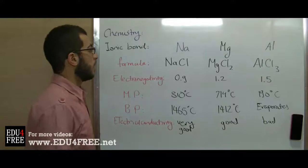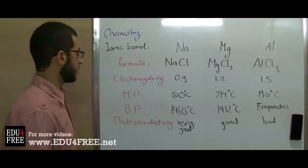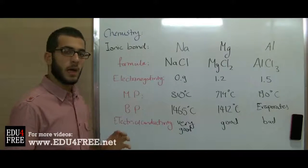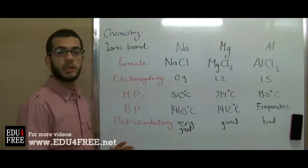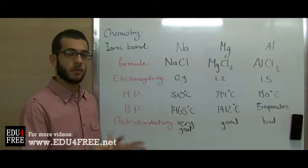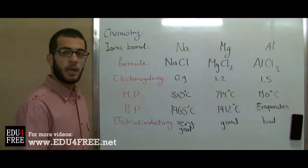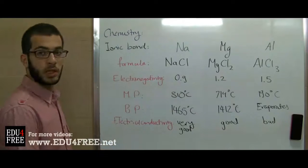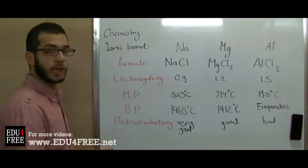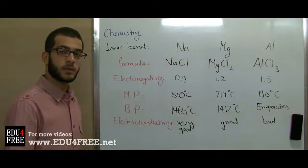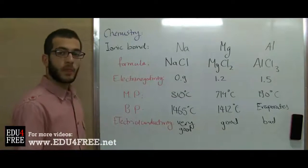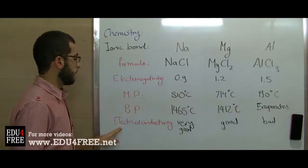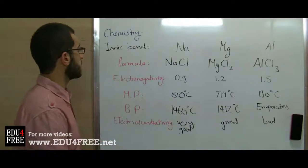Metals always lose electrons because they are large-sized atoms, so the attraction force between the electrons at the outermost energy level and the nucleus is weak. This allows electrons to move away from the nucleus easily. In contrast, in nonmetals the atom volume is small, so there is a great attraction force between the nucleus and the outermost energy level electrons. This not only helps electrons stick to the nucleus but can also attract electrons from the outside. That's why nonmetals accept electrons while metals lose their outermost energy level electrons. This is related to the size of the atom.